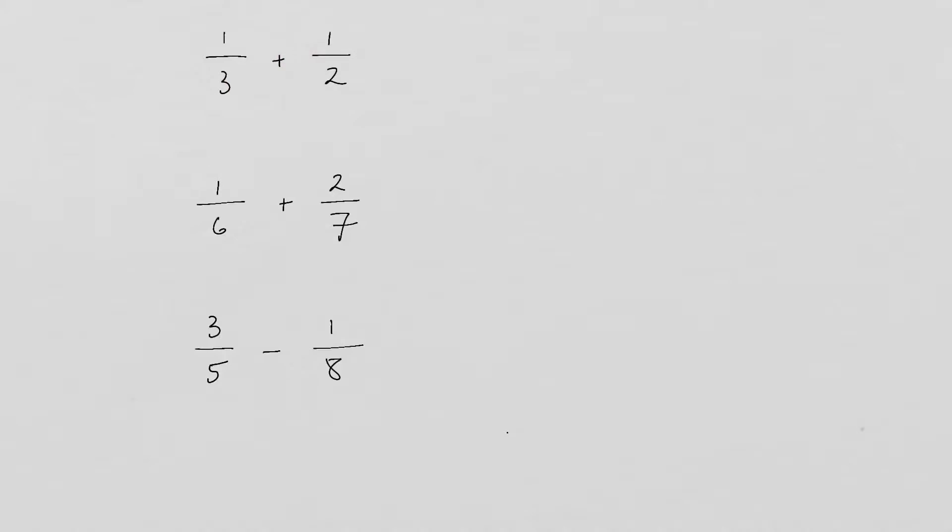We're going to have 1 times 2 plus 1 times 3, and then for the denominator we're just going to go straight across. So it's just gonna be 3 times 2.